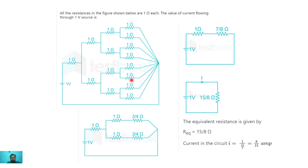The resultant of each parallel pair is in series with a 1 ohm resistor, and the resultant of that is in series with another 1 ohm, and so on. Simplifying step by step, we get intermediate values of 3/4 ohm from the parallel combinations, giving us 1 ohm + 3/4 ohm = 7/4 ohm at each stage. The combined equivalent works out to 3/4 ohm and 1 ohm segments.